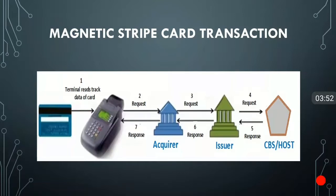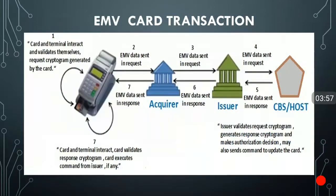To understand acquirer, issuer, and owner types of transactions, you can refer to my earlier video which talks about types of ATM transactions. Now coming to the EMV card transaction — the main difference between the magnetic stripe card and EMV card is that with a magnetic stripe card you are just swiping the card at the POS device and the data is read. But with an EMV card, whenever you insert the card inside the POS device, that card is locked until the transaction is completed.